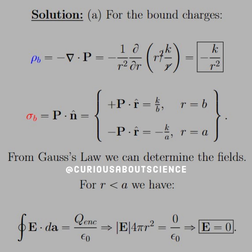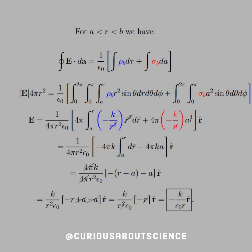Now we can use Gauss's law to determine the field produced by these bound charges. For R less than A, we have the surface integral equaling Q enclosed over epsilon naught, where the surface integral yields E times 4 pi R squared since our Gaussian surface is a sphere, and Q enclosed here is zero. Remember that we are a shell, not a full sphere.